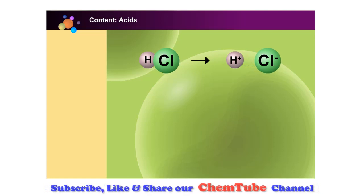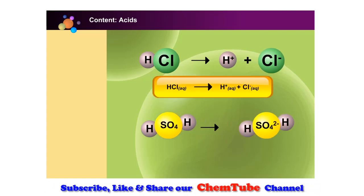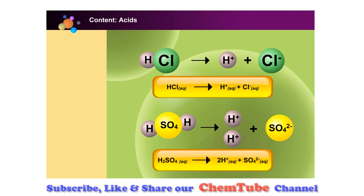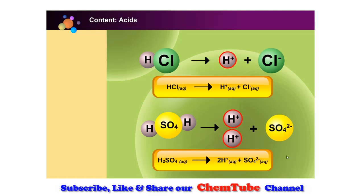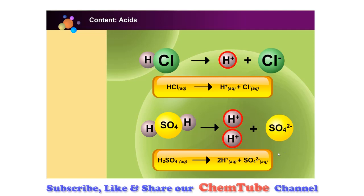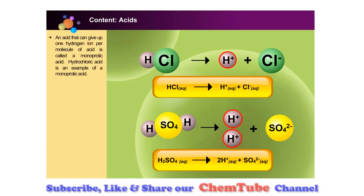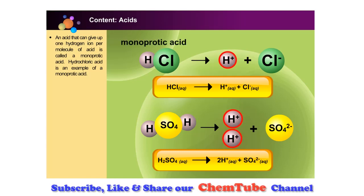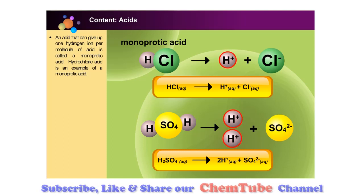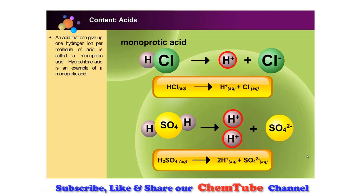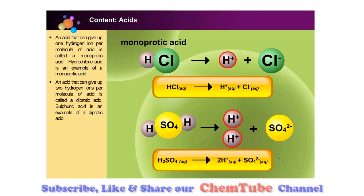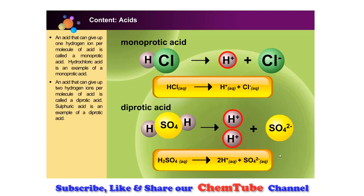Now look carefully at these two. Can you spot the difference? Look at the number of hydrogen ions produced. Hydrochloric acid releases one hydrogen ion. An acid that can give up one hydrogen ion per molecule of acid is called a monoprotic acid. Hydrochloric acid is an example of a monoprotic acid. Whereas sulfuric acid releases two hydrogen ions — an acid that can give up two hydrogen ions per molecule of acid is called a diprotic acid. Sulfuric acid is an example of a diprotic acid.